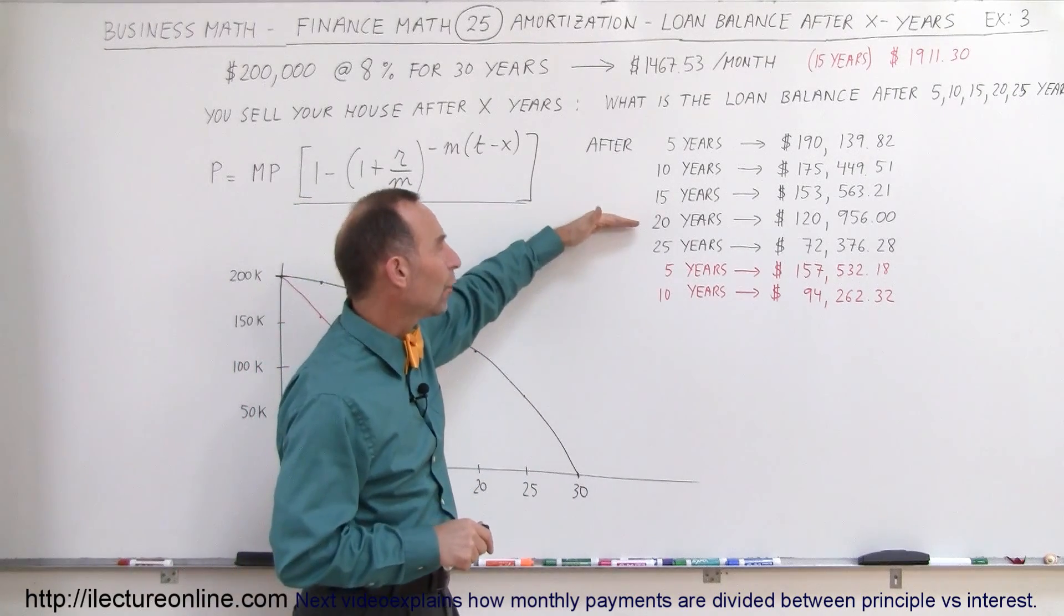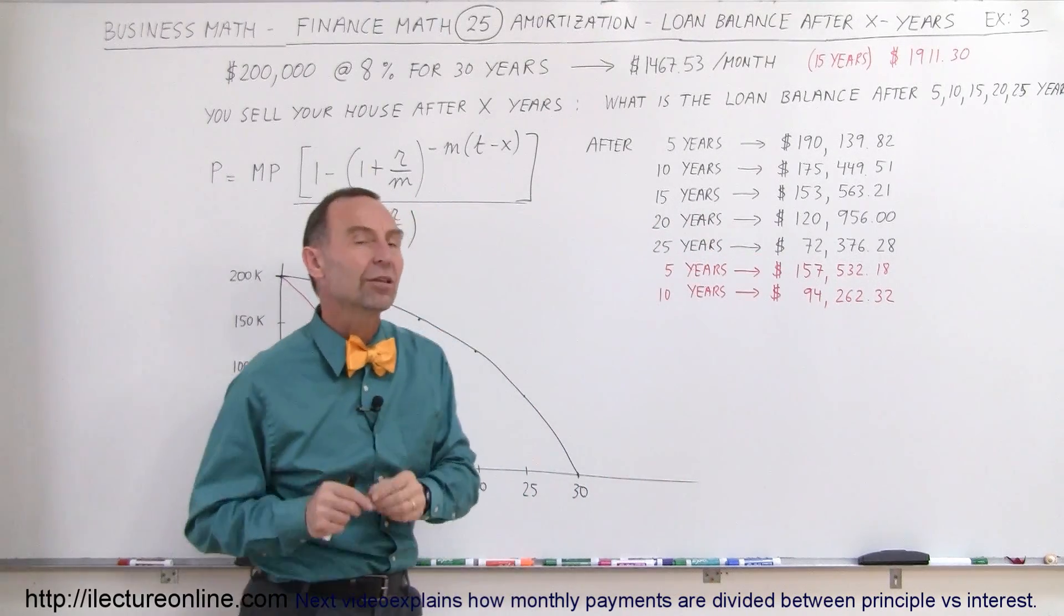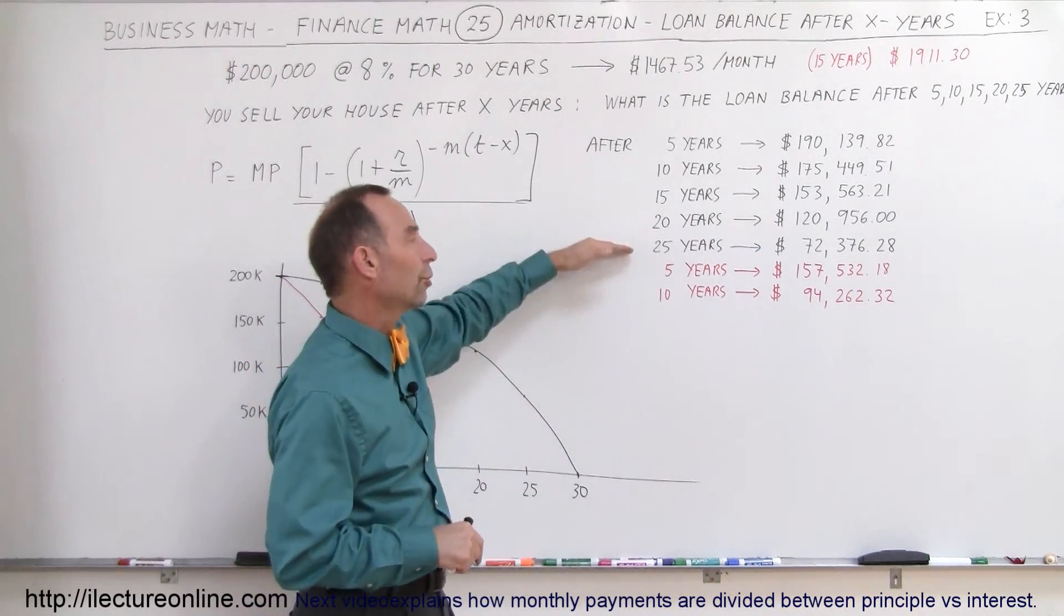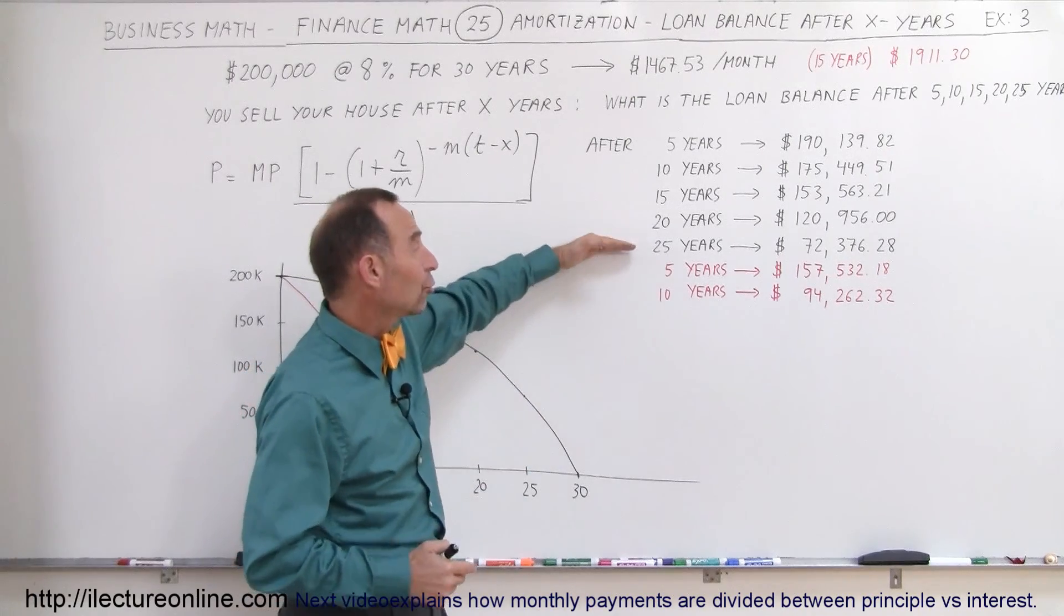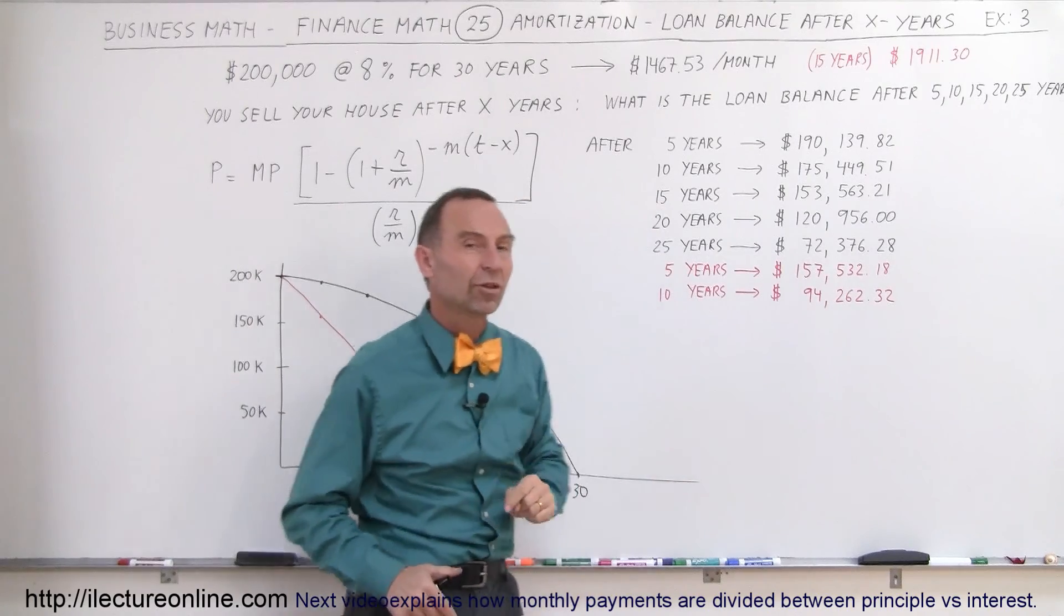Not until you start hitting 20 and 25 years do you begin to pay off a substantial amount of the original loan, and of course after 30 years it will all be paid off. But yet, after 25 years worth of payments, you will still owe $72,000 to the bank.